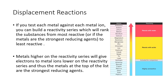Displacement reactions with metals: if you test each metal against each other metal ion, you can build a reactivity series which ranks substances from most reactive — or strongest reducing agents — to least reactive. Metals higher on the reactivity series will give electrons to metal ions lower on the reactivity series, and thus the metals at the top of the list are the strongest reducing agents.